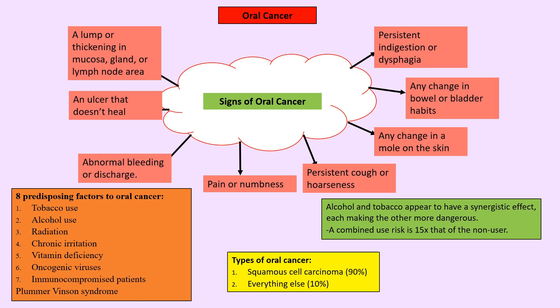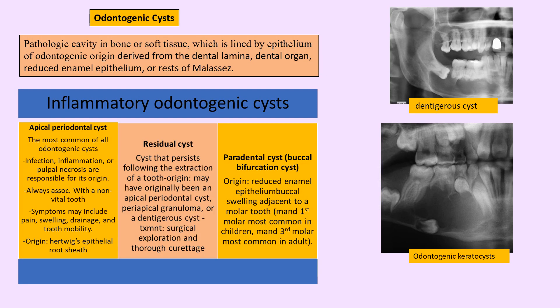Odontogenic cysts: a cyst is a fluid-filled cavity lined with epithelium. The periapical (radicular) cyst is the most common odontogenic cyst, associated with a non-vital tooth, presenting with pain, swelling, drainage, and tooth mobility. It arises from Hertwig's epithelial root sheath. If the tooth is extracted without proper curettage, the remaining cyst becomes a residual cyst.